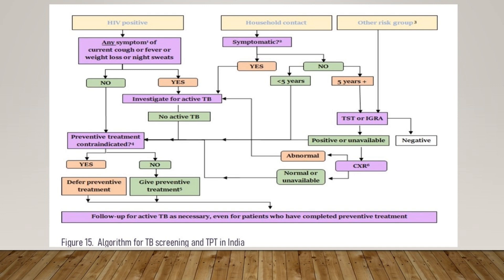For a household contact: if the patient is symptomatic, investigate for active TB and take the same path. If not symptomatic and the child is less than 5 years, straight away start preventive therapy. If the child is more than 5 years, do IGRA — I would not recommend TST. If IGRA is positive, do a chest X-ray. If abnormal, investigate for active TB. If normal, give preventive therapy.